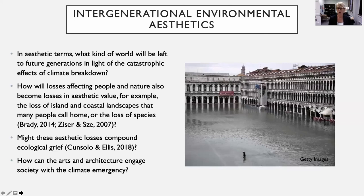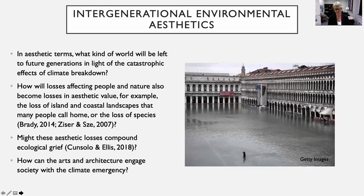More specifically: how will losses affecting people in nature also become losses in aesthetic values? How will the loss of island and coastal landscapes — those places that many people call home — how will they be changed, aesthetically speaking? And when we already know we have mass extinctions going on of various animal, plant, and insect species, how will the loss of those species affect not only ecology, but also aesthetic qualities within those ecologies? Might these aesthetic losses contribute to our ecological grief? And how will that happen? Ecological grief is a concept being discussed across many different disciplines today.